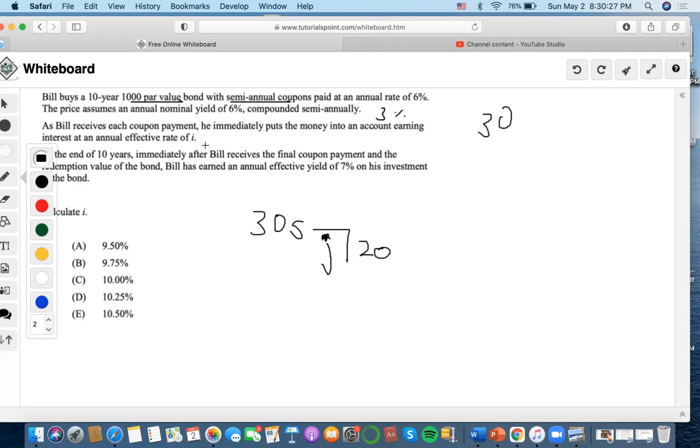And then towards the end, we will have to convert it to annual. But now at the end of the 10 years, immediately after Bill receives the final coupon payment and the redemption of the value, because that is what is supposed to happen when we're reinvesting.